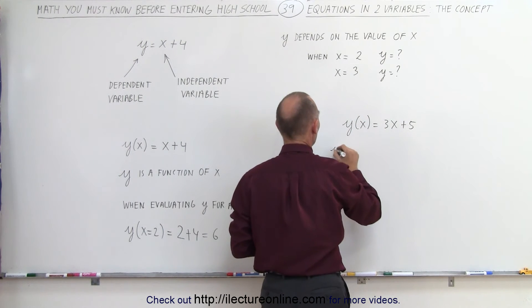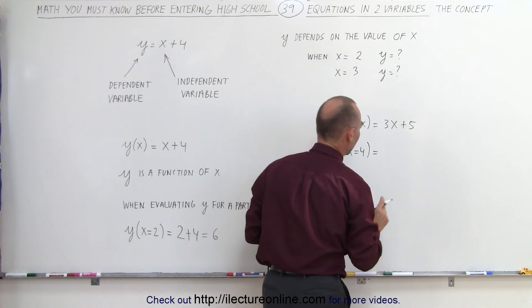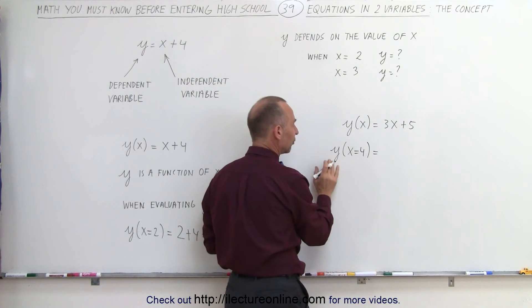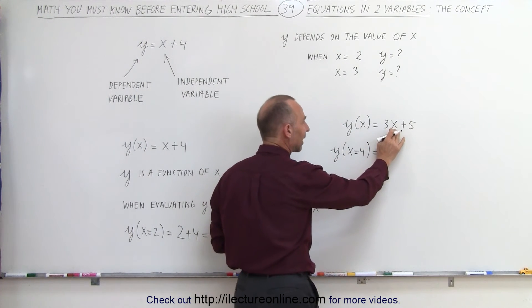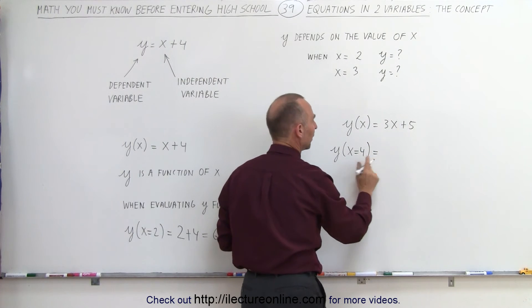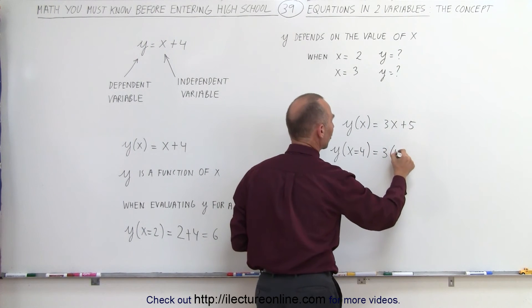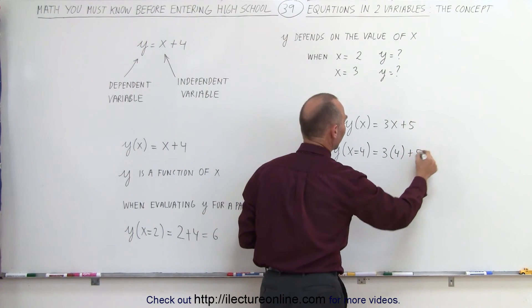So y, when x is equal to 4, is equal to—again, we're going to evaluate the value for y by replacing every x by the value that x is equal to, which is 4. And this becomes 3 times 4, plus 5.